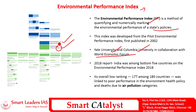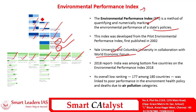Environmental health is given 40 percentage weightage. Under ecosystem vitality, it covers biodiversity, habitat, forest, fisheries, climate and energy, air pollution, water resources, and agriculture — the crucial factors for environmental sustainment. Under environmental health, the factors include air quality, water quality, heavy metals, lead exposure, sanitation, PM 2.5 exposure, drinking water, and household solid fuels.